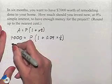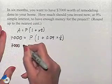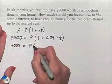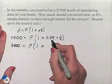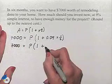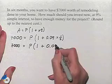So let's evaluate this. We're going to have 7,000 equals P times one plus. We're going to multiply 0.09 times one half. That's going to give us 0.045.